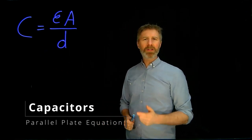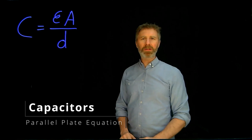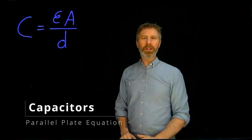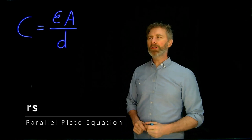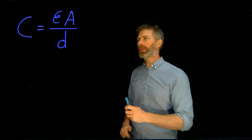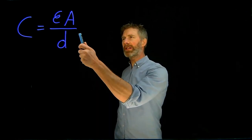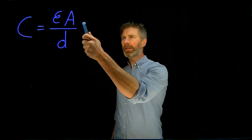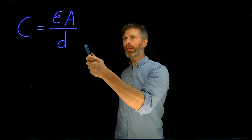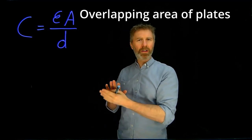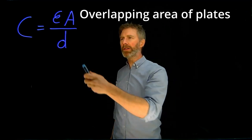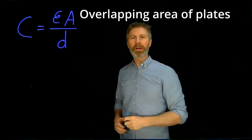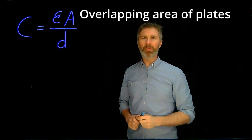The capacitance of a parallel plate capacitor is completely determined by the physical characteristics of the capacitor. This equation is showing that the capacitance is equal to the permittivity times the area — the cross-sectional area of the parallel plates — divided by the distance between the plates.